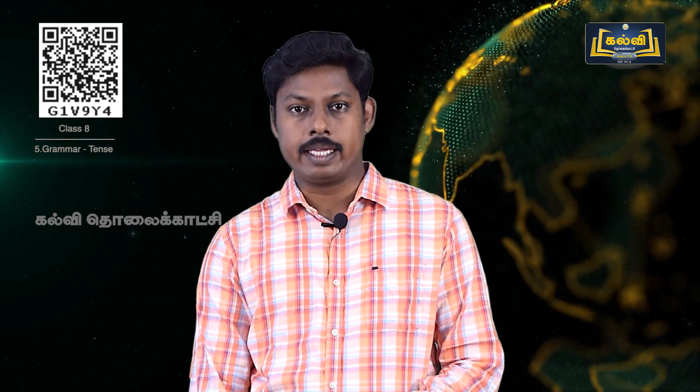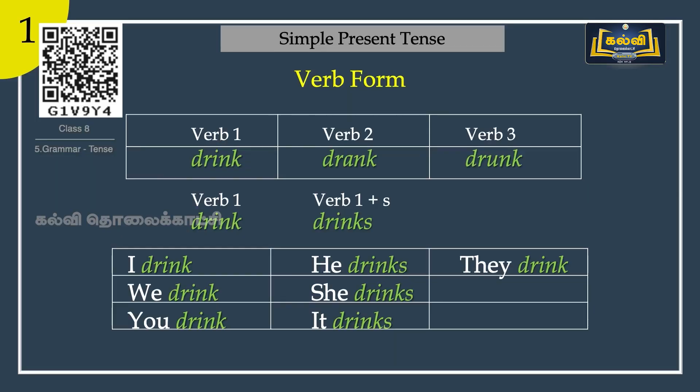What are the verb forms of simple present tense? We have seen four forms: verb one, verb two, verb three, and verb plus ing. Since this is the first tense, you will guess correctly — verb one. But there is a small thing to notice: verb one has another form also. You should add -s or -es to the verb. For example, let us look at the word drink: drink, drank, drunk, and drinking. We are going to use only the first word, drink, for simple present tense.